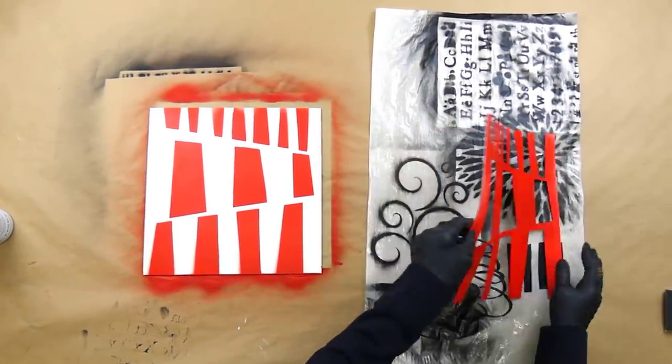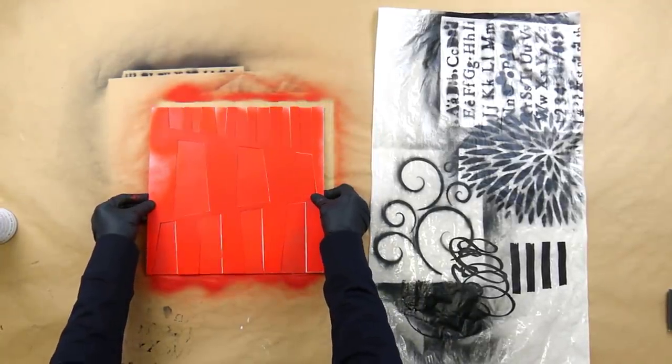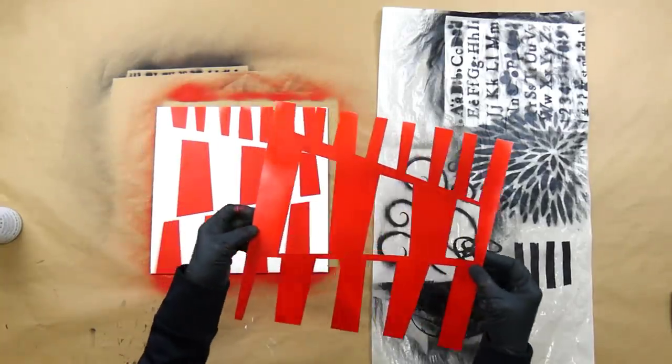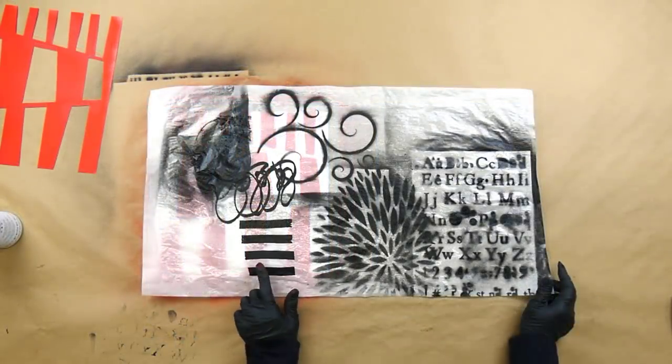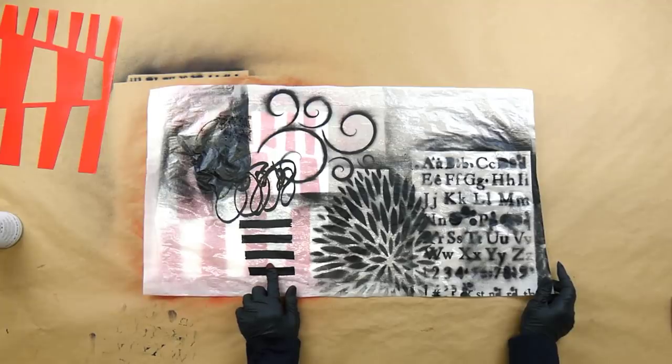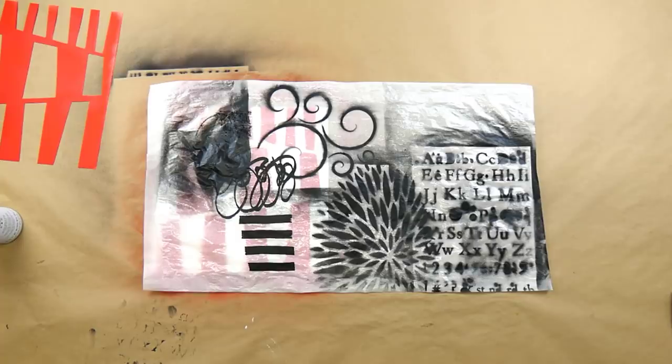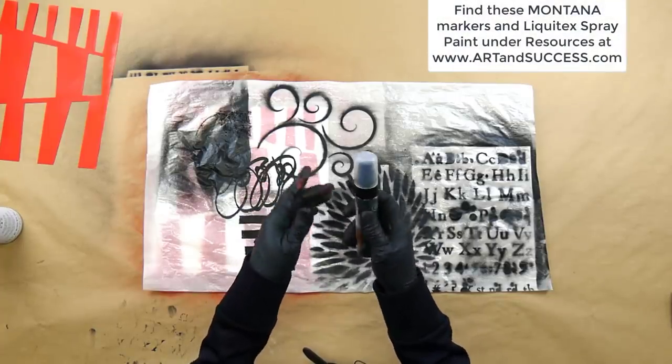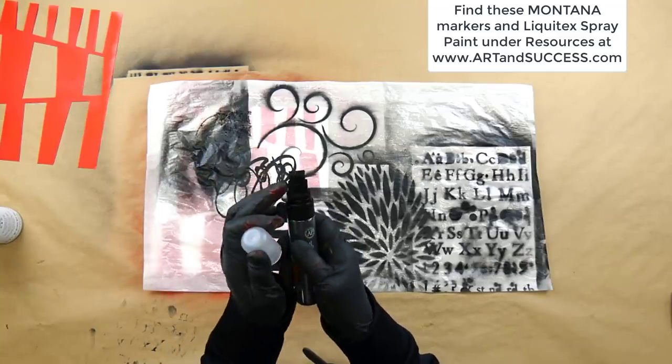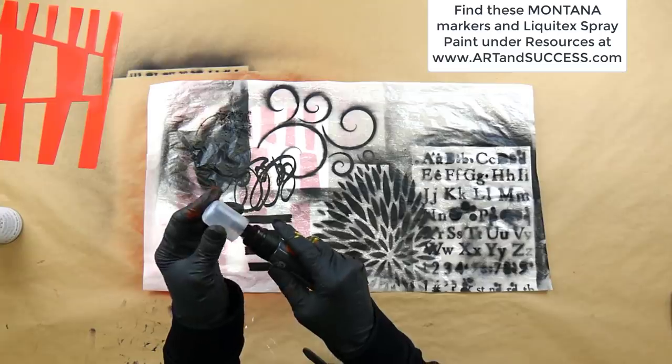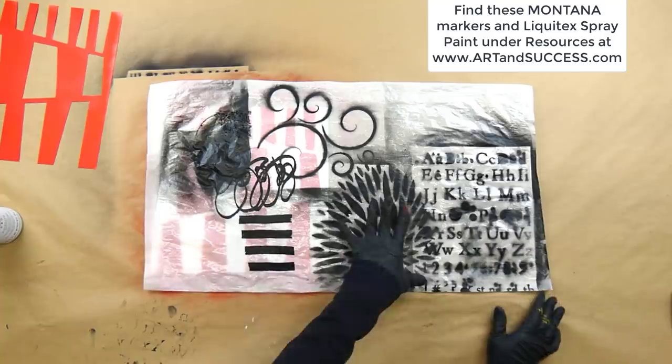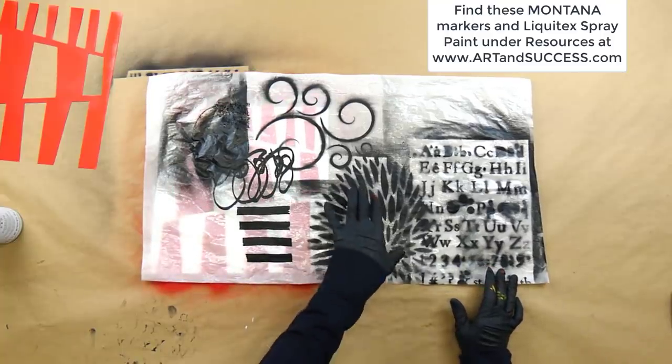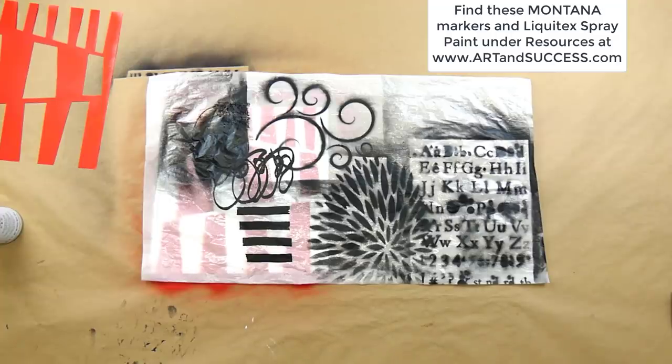To review, here is the stencil that I used with the red spray paint, and I cut this from the Mighty Board and can reuse it again and again. The spray paint through the stencils, I took a Montana marker here, and I made some marks with that. It's an acrylic marker. They come in different sized tips, so this one that I used was like a half inch marker. Here I had a stencil that I sprayed with black spray paint made by Liquitex, and here is the original stencil for that.